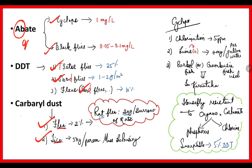For eradication of the Rat Flea, we will be giving 30 grams per burrow of Carbaryl dusting. Another mode for eradication of Cyclops: 5 ppm strength of chlorination and 4 mg per gallon of water — adding lime — and Gambusia fish are used to feed on the Cyclops.